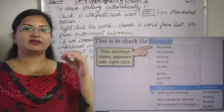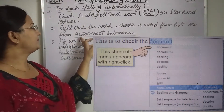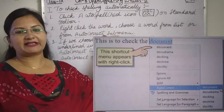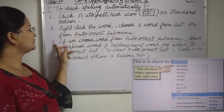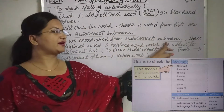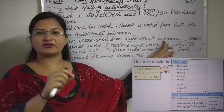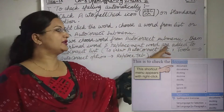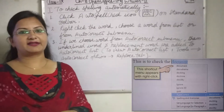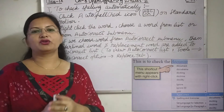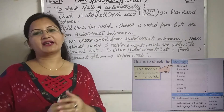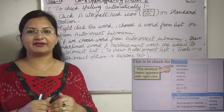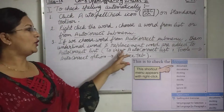Otherwise, in the right-click menu there is an auto correct option. When you click on auto correct, a sub-menu will appear with suggestions. If you choose a word from the auto correct sub-menu, the underlined word and the replacement word you chose are both added to the auto correct list in Writer.